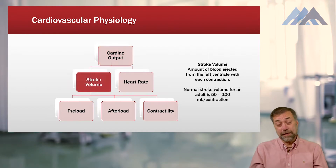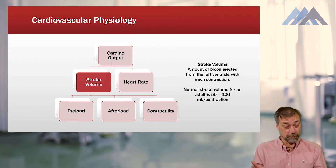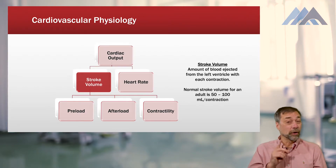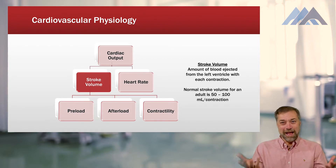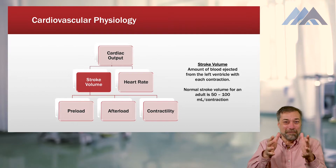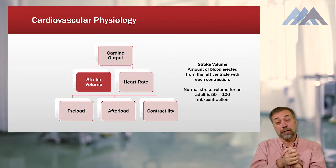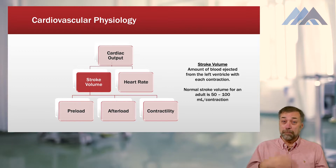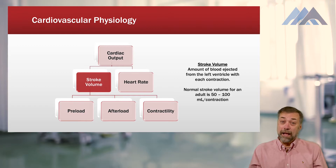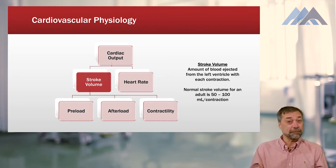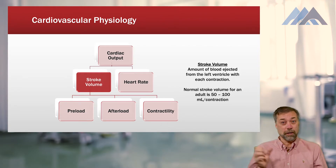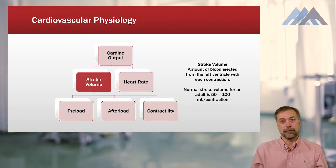Now two things make up your cardiac output. First, stroke volume — the amount of blood ejected from the left ventricle per contraction. Using the bucket analogy, when the heart contracts, the amount of blood in the bucket after a single contraction is stroke volume. On a healthy adult, that equates to somewhere between 50 and 100 ml of blood. So stroke volume is 50 to 100 ml, and cardiac output is 4 to 8 liters.